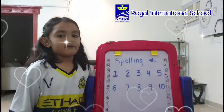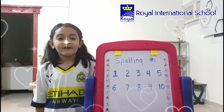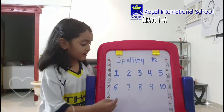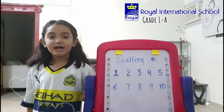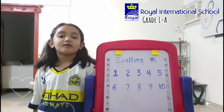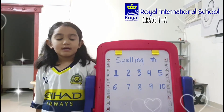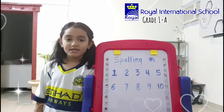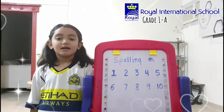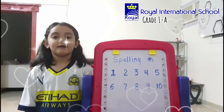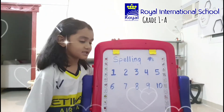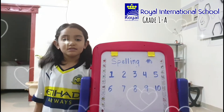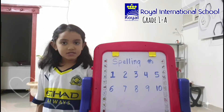Five: F, I, V, E. Five. Six: S, I, X. Six. Seven: S, E, V, E, N. Seven. Eight: E, I, G, H, T. Eight.